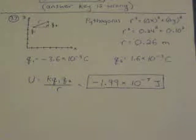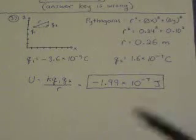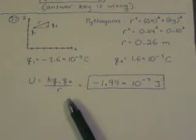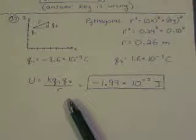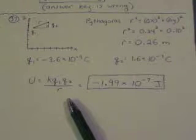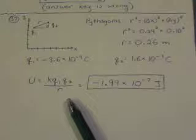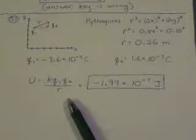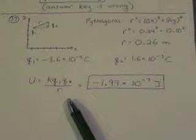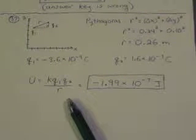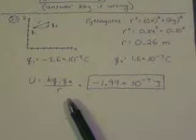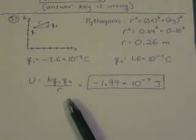So when we plug in for the potential energy between the pair, we use this equation, the same as we did in number 33. Although this time the charges are different, so it's k times q1 times q2 divided by that distance. And you should get a potential energy of negative 1.99 times 10 to the negative 7 joules. The negative means that it's an attractive force.